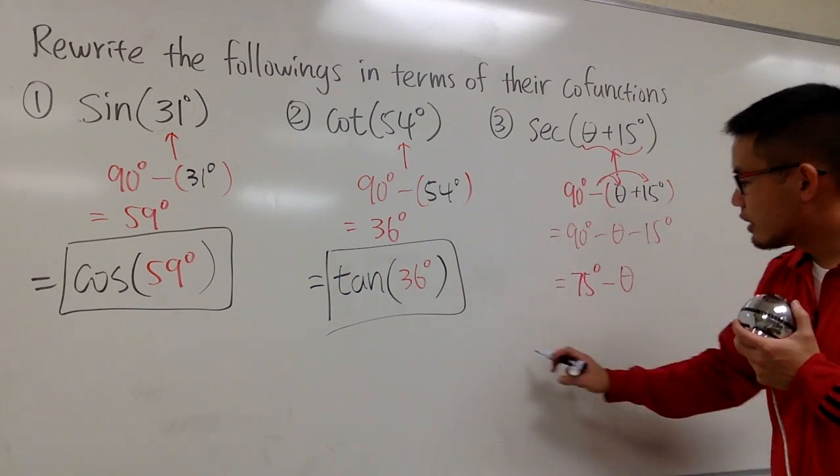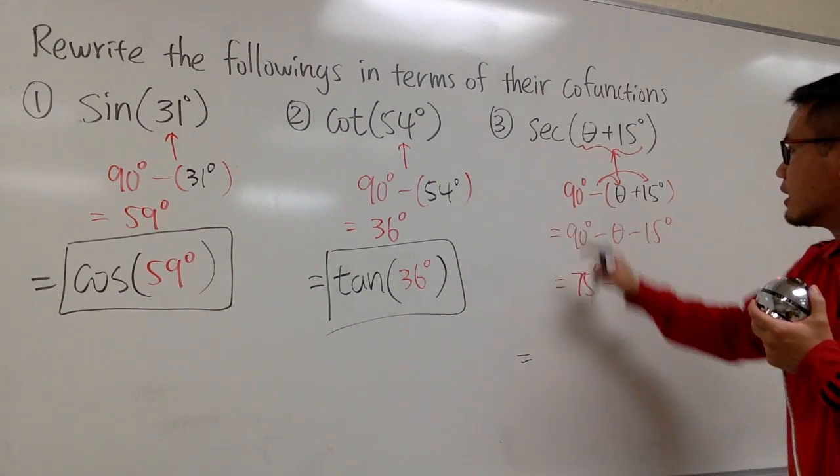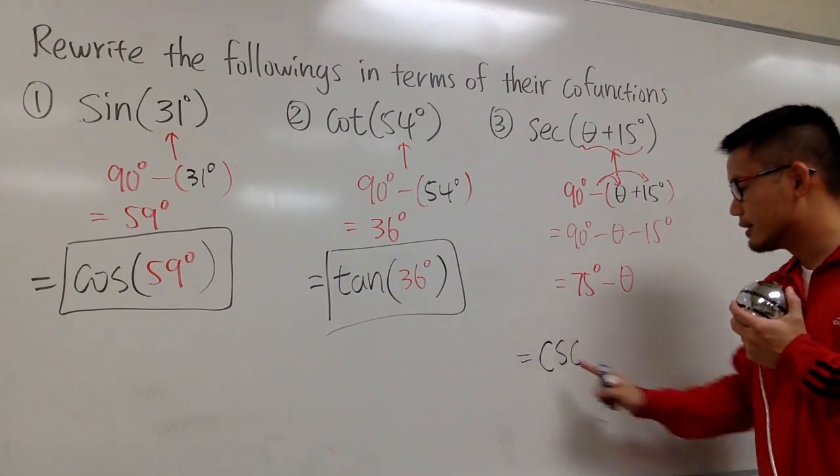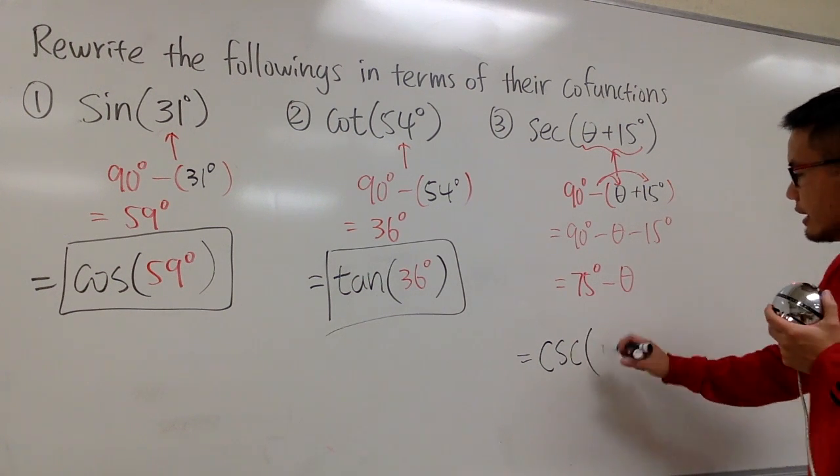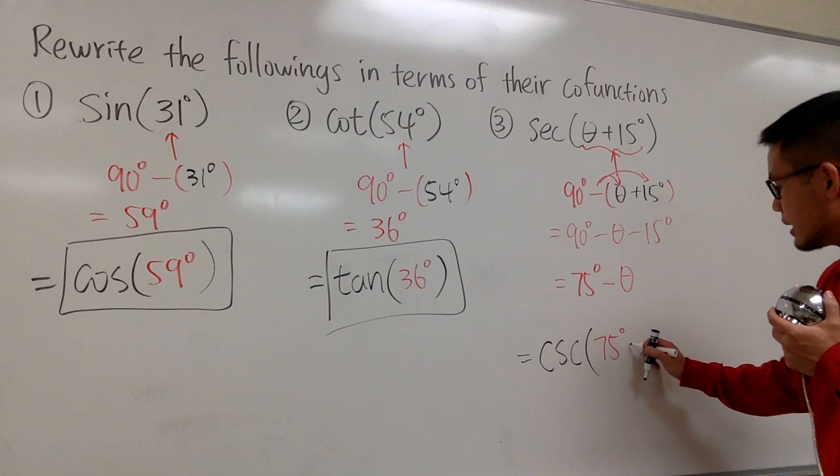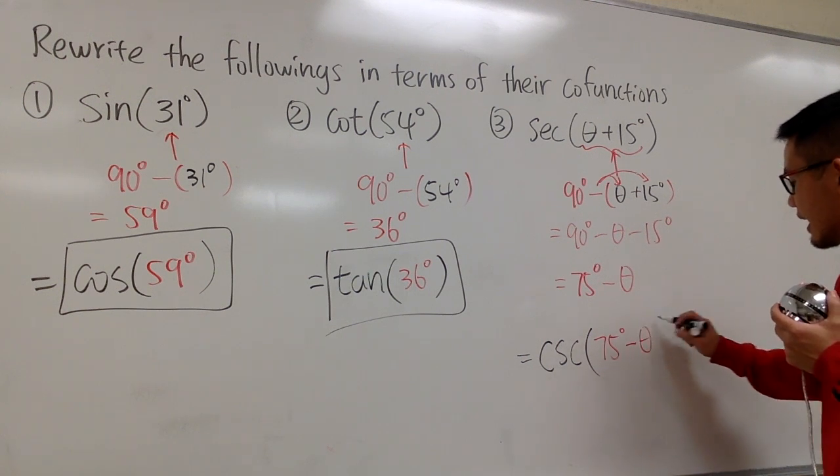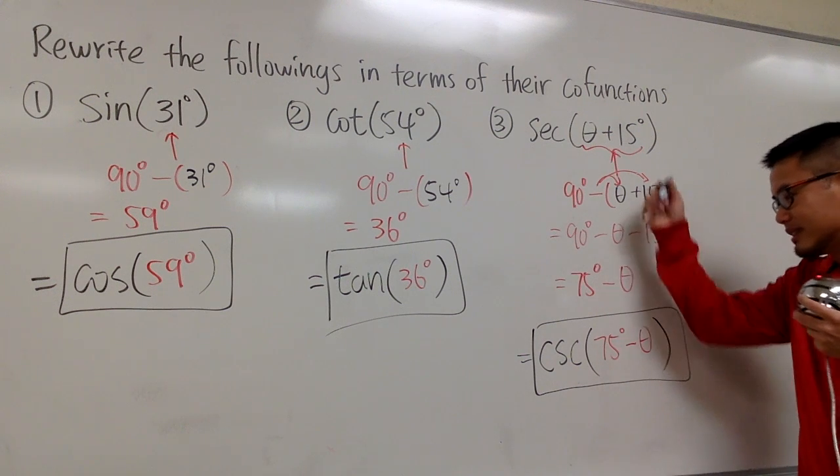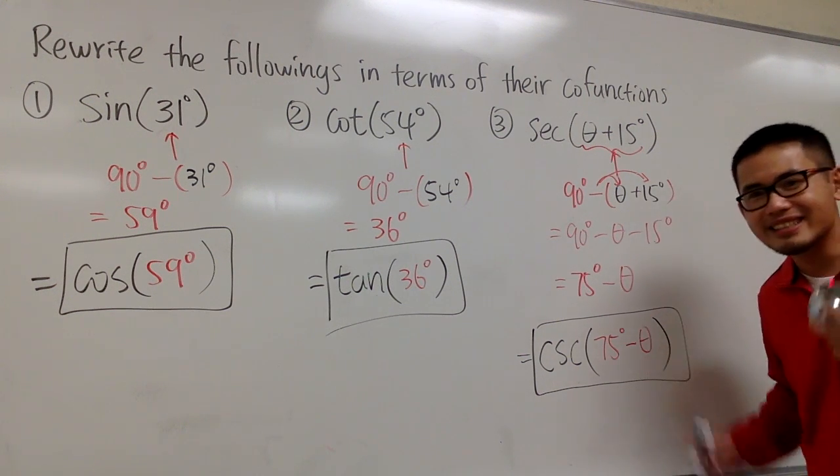So for this right here, we have to write a formula. For secant, its co-function is going to be cosecant. And then the angle inside, it will be this: 75 degrees minus theta. And this right here, this is the same as that. This is like an identity right here. And that's it.